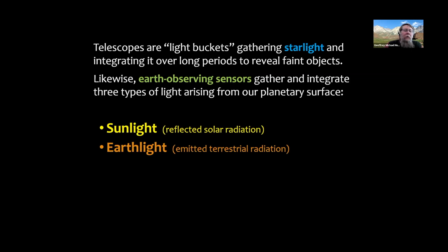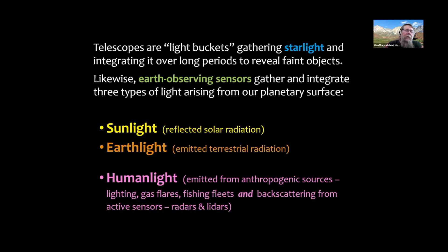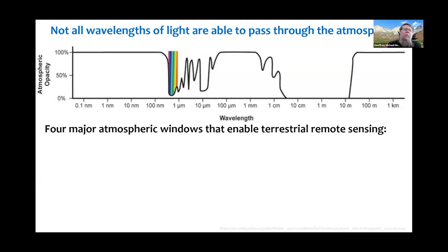We sense warmth through our skin. There's another type of light arising from the planetary surface: human light — the lighting we have at the surface. You've all seen nightlight images; gas flares and fishing fleets use lights at night that we can see from space. We can also look at backscattering from active sensors, whether imaging radars or lidars. Today we're going to focus on sunlight and earth light.